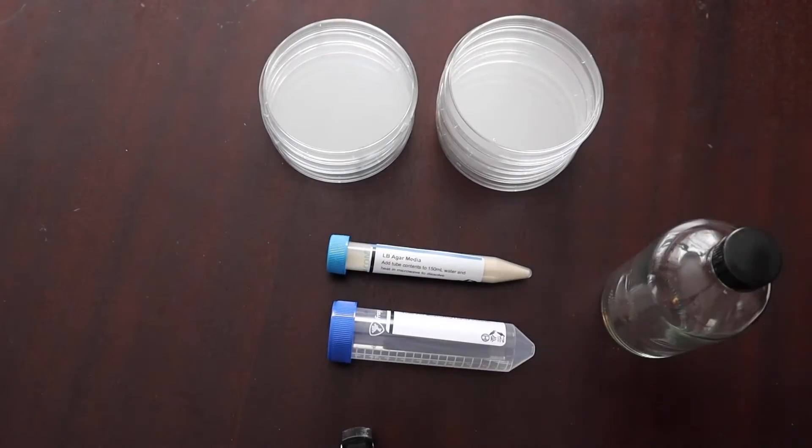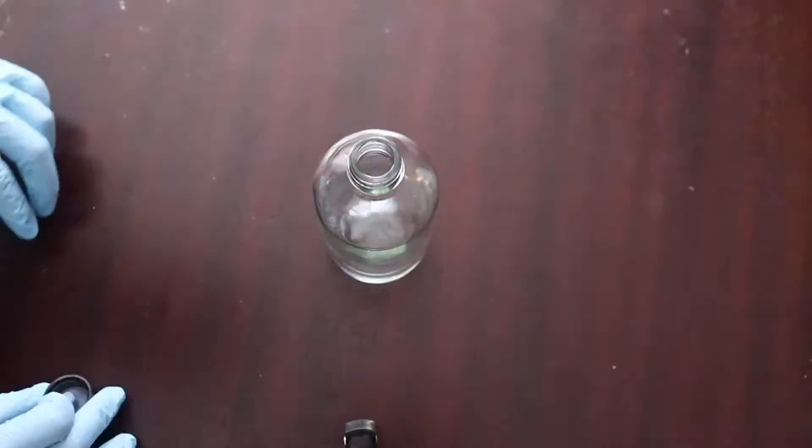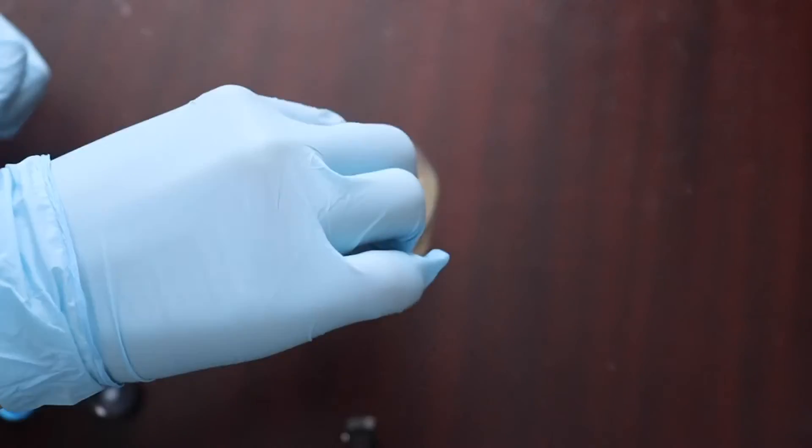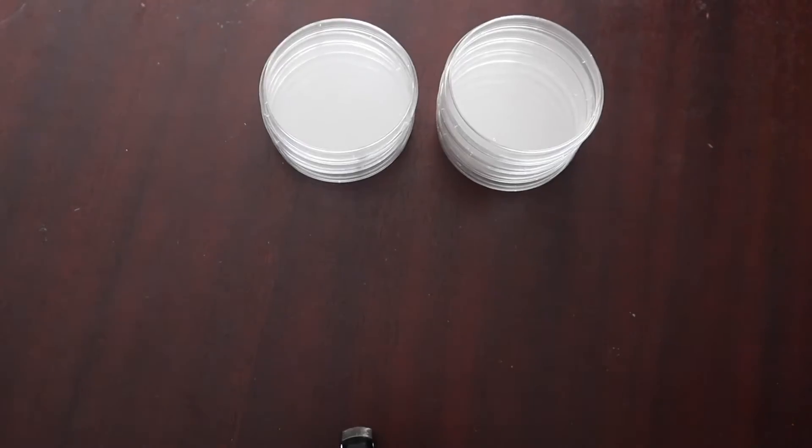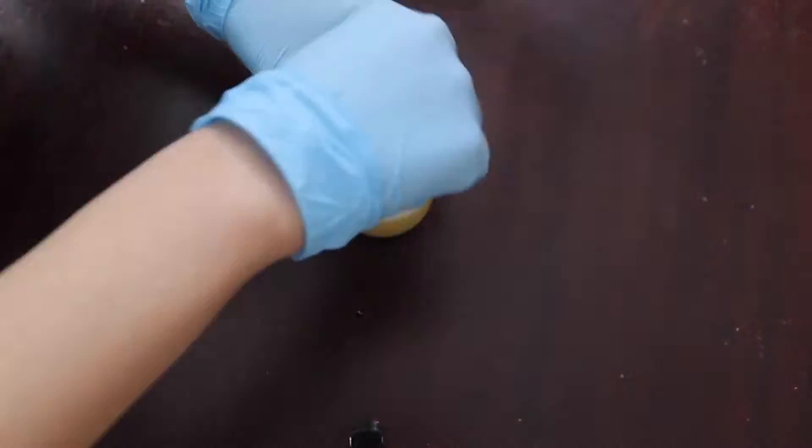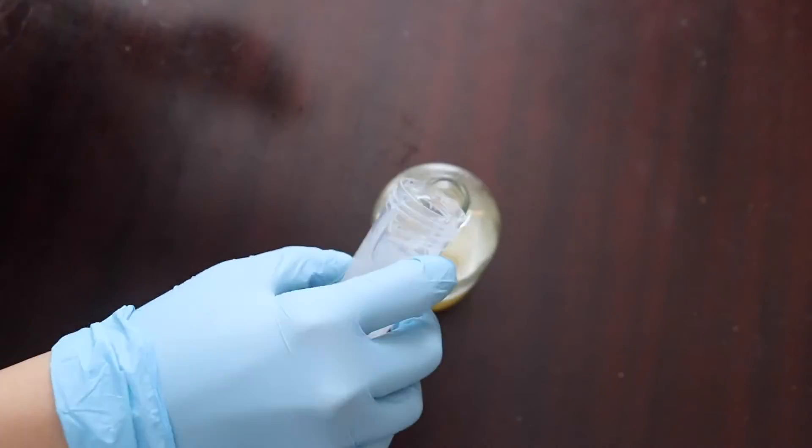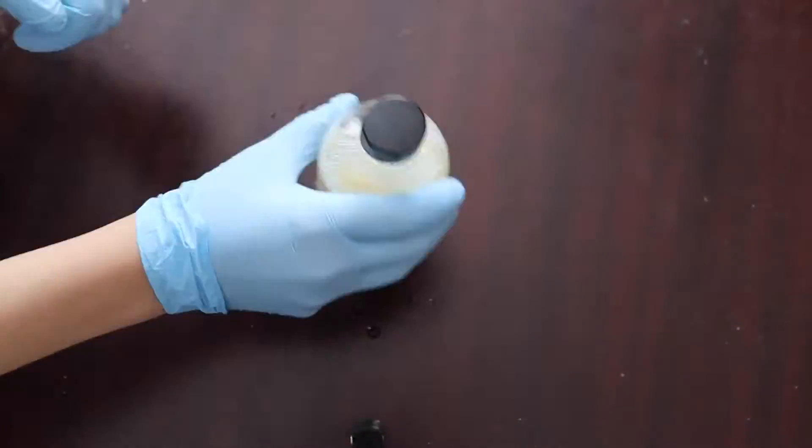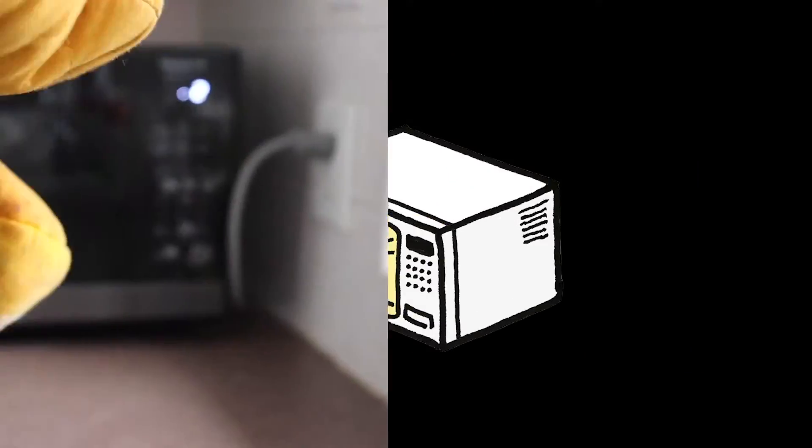The first step is to make our LB agar, which will be the food for our bacteria. I'm making a normal LB agar right now, but I'll also have to make one with streptomycin and arabinose antibiotics, which I'll be going into later. It's essentially just mixing powder with water and microwaving it until we get this transparent, translucent solution.